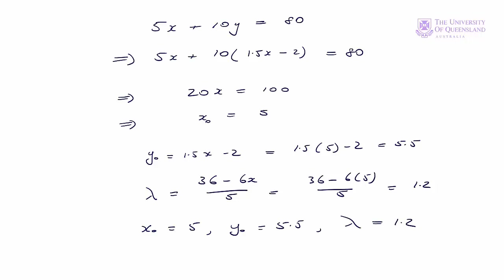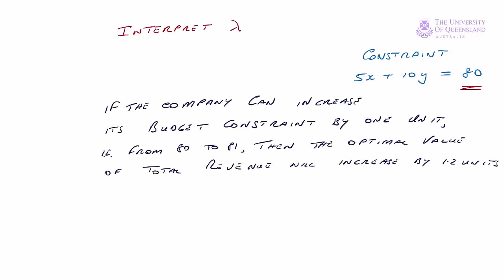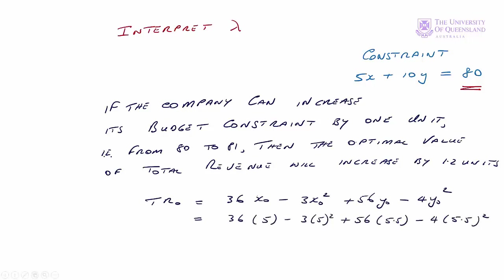Next we interpret lambda. The constraint was 5x plus 10y equals 80. If we increase the right hand side by 1 unit to 81, the optimal value of the objective function will increase by 1.2 units — the value of lambda. To finish, the optimal value of total revenue is found by substituting the optimal values of x and y, giving 292. So if the firm can access one extra unit of the constraint, it can increase total revenue from 292 to 293.2.